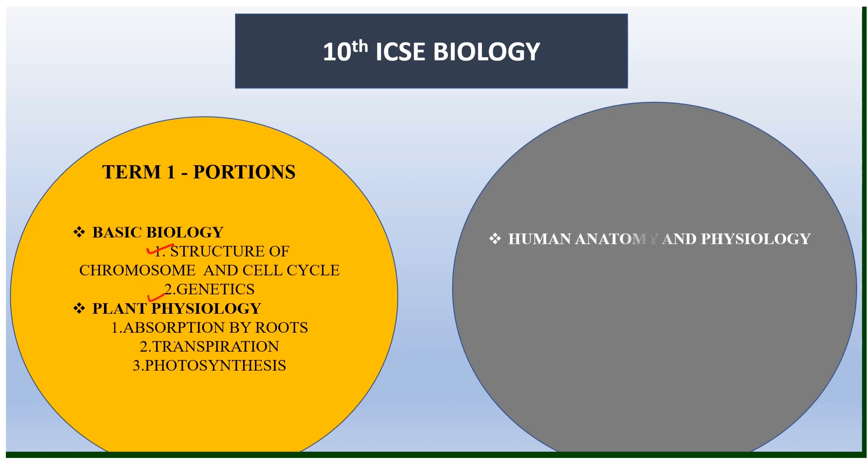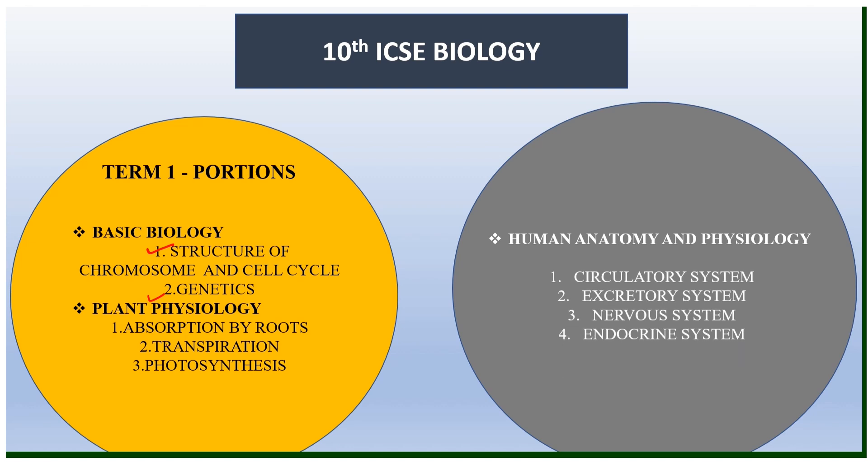For Term 2 portions, you will have human anatomy and physiology, which includes four chapters: the circulatory system, excretory system, nervous system, and the endocrine system. These are your Term 2 portions of 10th ICSE Biology.